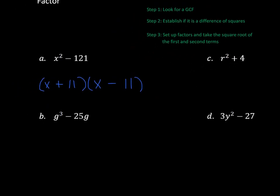Let's look at example B. Step one: look for a GCF. G cubed and 25G each have a G in common, so we write the G out front — that's like dividing each term by G. G cubed divided by G is G squared, and negative 25G divided by G gives us minus 25.